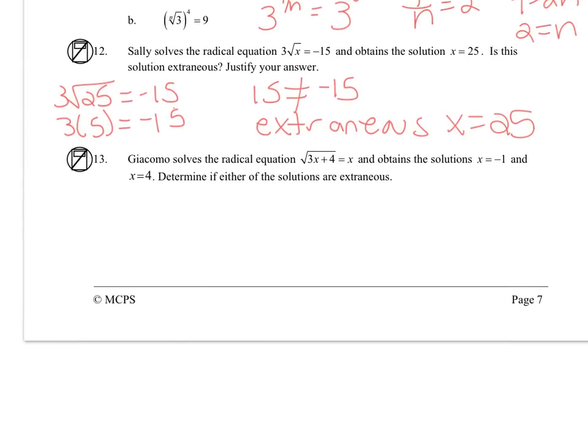So now we get two answers for 13, we have to check both. So let's check x equals negative 1 here, check x equals 4 here. Actually, I don't even have to go any further with negative 1, when you square root a number, you will never get a negative value. So this one is extraneous.